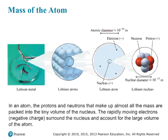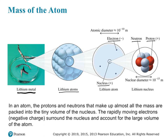Now that we know all the different pieces of the atom, if we could zoom in on a sample of lithium, we would see lithium atoms — the smallest piece of an element. Within that atom, we would see a nucleus as well as some electrons, and if we could zoom in on the nucleus, we would find protons and neutrons. Protons are positively charged; electrons are negatively charged.